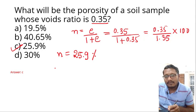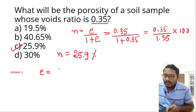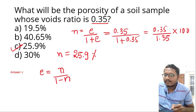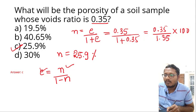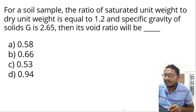If they have given you the porosity and asked you to calculate the voids ratio, then the formula would be: e equals N upon 1 minus N. This will be the formula to calculate the voids ratio if they have given you the porosity.